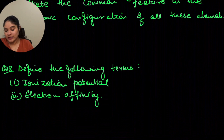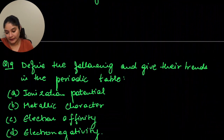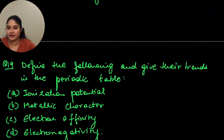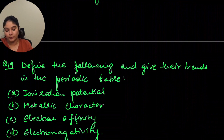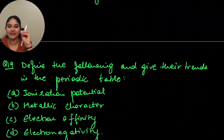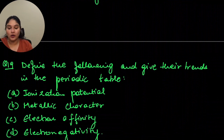Define the following and give their trends in the periodic table. When we talk about ionization potential: moving down the group, ionization potential decreases; moving across a period, it increases. Metallic character — the tendency to lose electrons: moving down the group it increases because atomic size is increasing and there is more gap between the nucleus and the outermost electron, making it easy to donate. Moving across a period, it decreases.